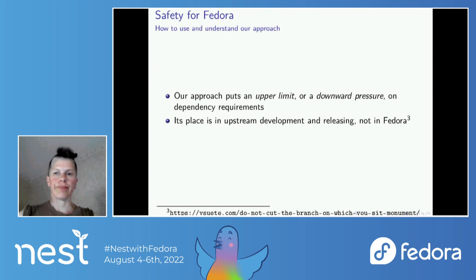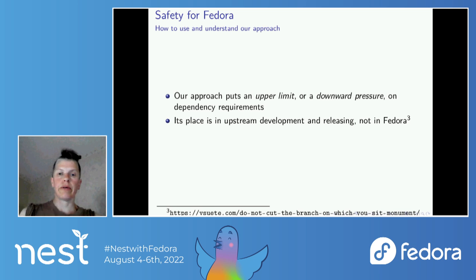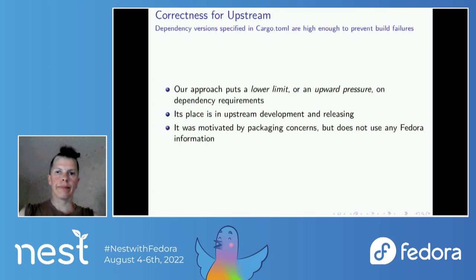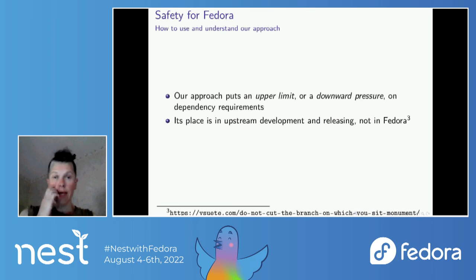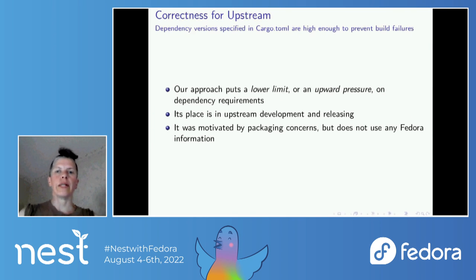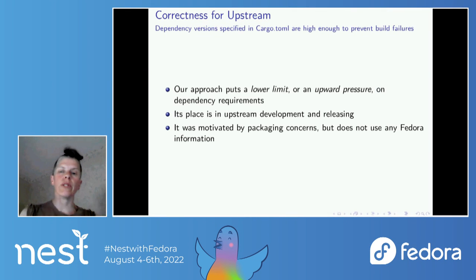To summarize how this works: because we do this, we're putting an upper limit — a downward pressure — on our dependency requirements. We would encourage people to put this infrastructure in their upstream packages, not in Fedora, if they're concerned about making packaging easy in Fedora. That's the safety for Fedora as I define it. But correctness for upstream is a different idea entirely — it puts a lower limit, pushing things up. Its place is in upstream development and releasing, though it was motivated by some of our Fedora packaging concerns.